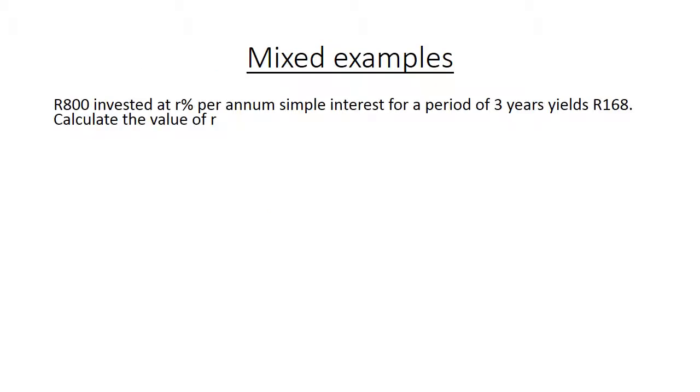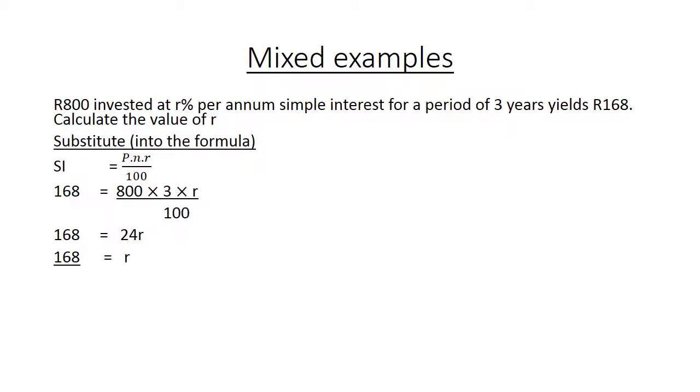More examples. 800 Rand invested at R% per annum simple interest for a period of 3 years yields 168 Rand. Calculate the value of R. Substitute into the formula. 800 Rand times 3 times R. We don't know what is the R, so we want to calculate this. So 168 is 24R. If you do the calculations, 800 times 3 divided by 100 gives you 24R. Now you are going to divide both sides by 24, and your R is then 7. Which means the interest rate is 7%.